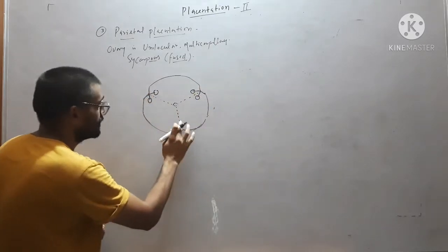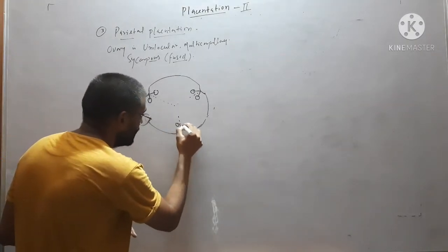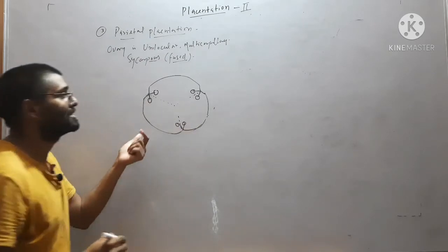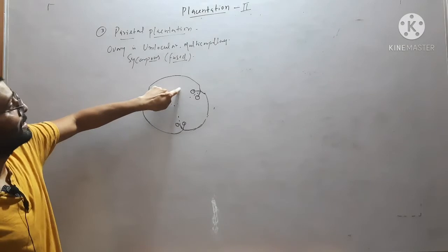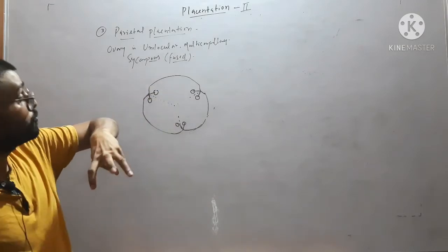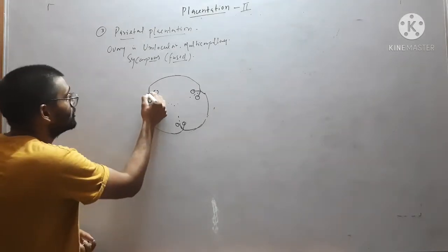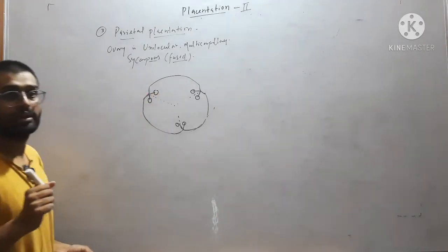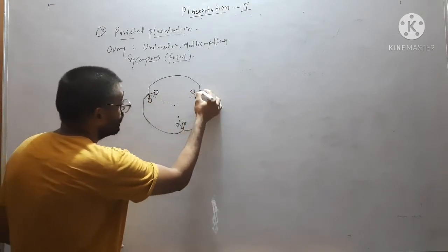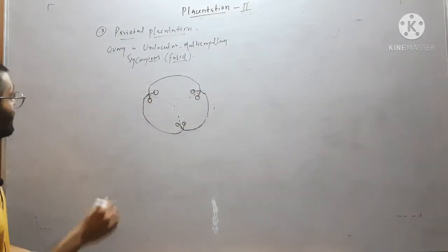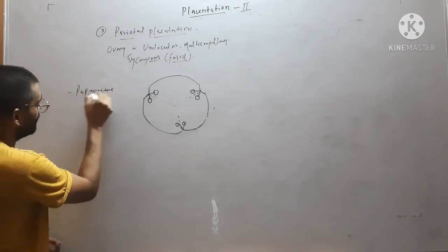There will be no locule formation. The ovary will be multicarpellary. You can see in this diagram there are three carpels — one, two, and three — and all three are fused. Placentae will arise at the margin of the fusion, where ovules arise. The example is the Papaveraceae family.